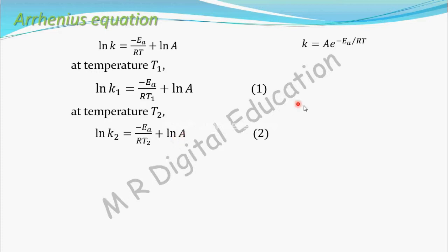Now, subtract 2 by 1, that is equation 2 minus equation 1. So, ln k2 minus ln k1. This whole term minus this whole term, that is minus Ea by RT2 plus ln A minus of this whole term minus Ea by RT1 plus ln A.